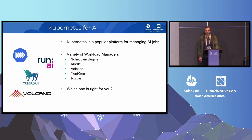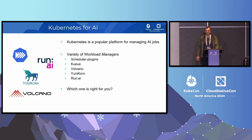Kubernetes is a popular choice for managing AI workloads, and it offers a number of solutions for job management. We wanted to compare the solutions across different workload types to find the best fit, and most importantly, to do it before we deploy in real clusters.